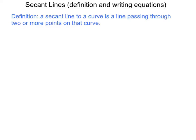So in this video I'm going to talk to you about secant lines, and the reality is that in order to understand tangent lines, which are vitally important to calculus, we need to know what a secant line is. So very simply, a secant line to a curve is just a line that passes through two or more points on that curve.